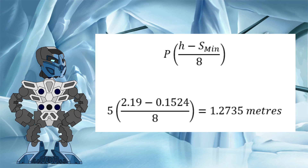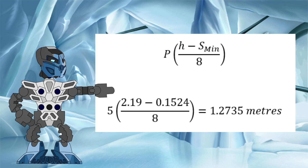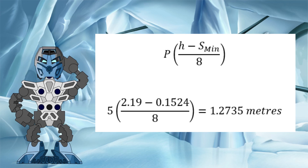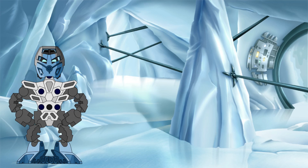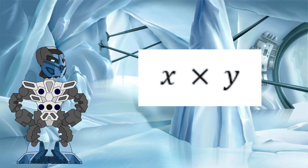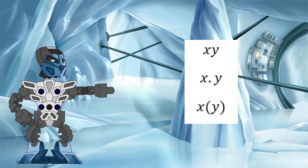You will notice that some of this equation is in parentheses. That is simply there to let you know the order of operations, meaning that you need to work out the section in the parentheses first — in this case, h minus s min over 8 — and then multiply that result by 5. You may have also noticed that we did not show the multiplication symbol here. When writing equations like this, the multiplication symbol is usually omitted to avoid confusion with the symbol x that is usually used for an unknown quantity.